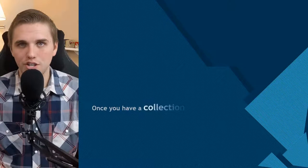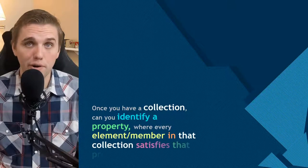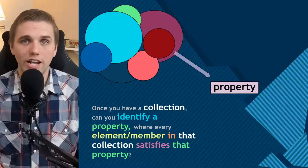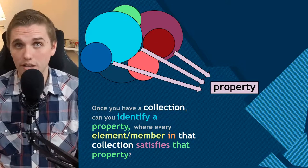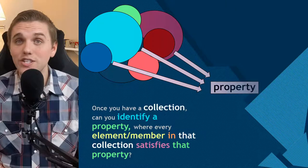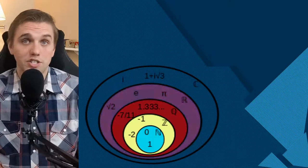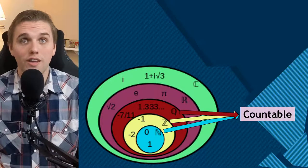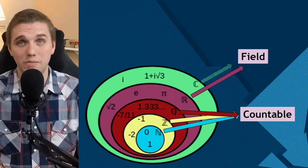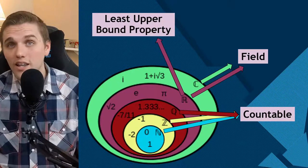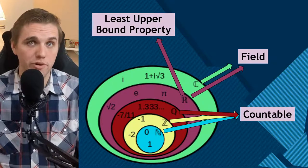Now let's pause the set theory history for a moment. Once you have a collection, can you identify a property where every element or member in that collection satisfies that property? We can identify properties from collections of objects — we do this all the time in mathematics. We might say that the natural numbers, integers, and rational numbers are all countable sets; that the real numbers and complex numbers are both fields; or that the real number line has the least upper bound property. This is what it looks like to take a collection of objects and identify a property that all of its members collectively share.